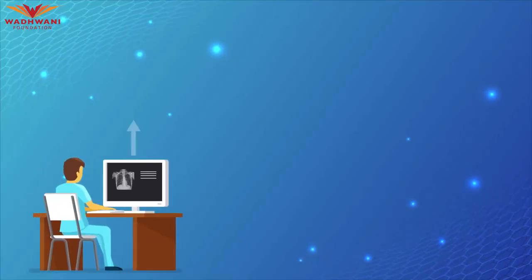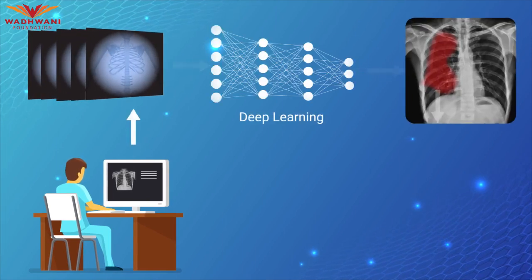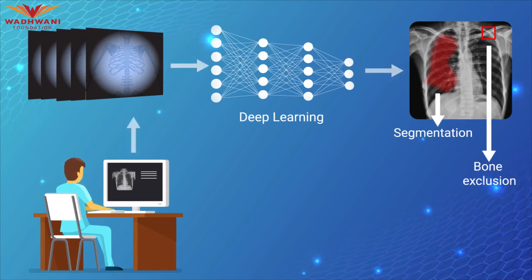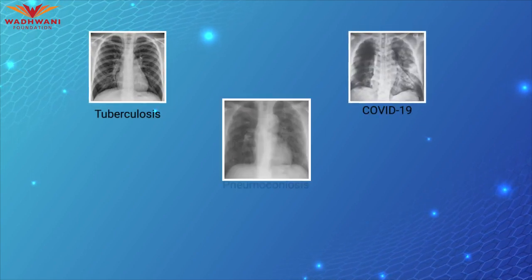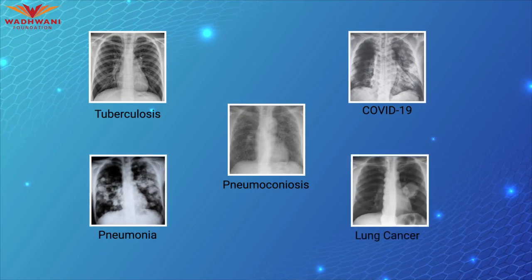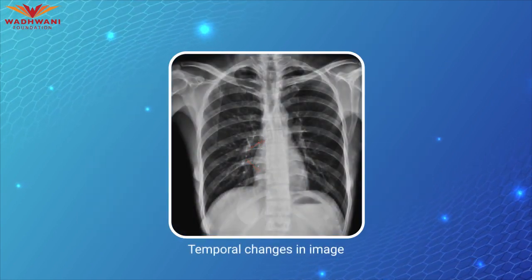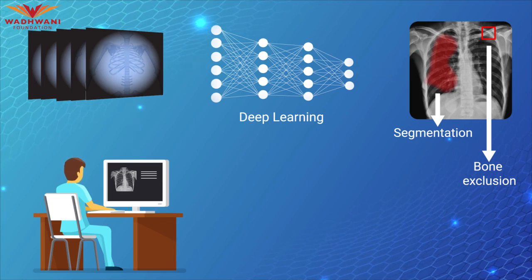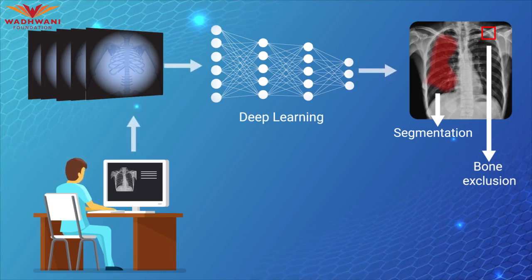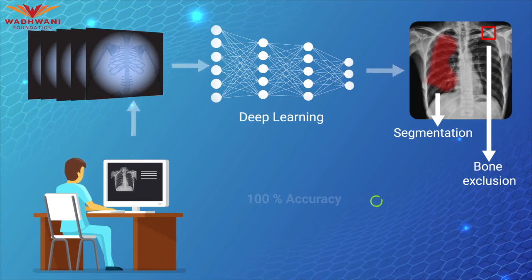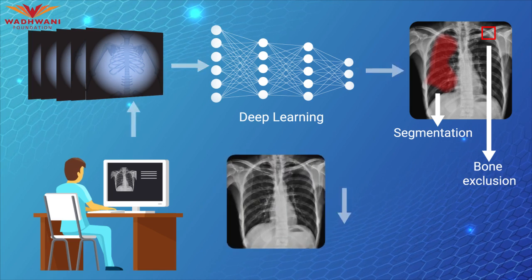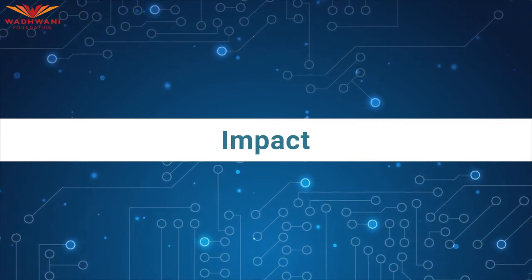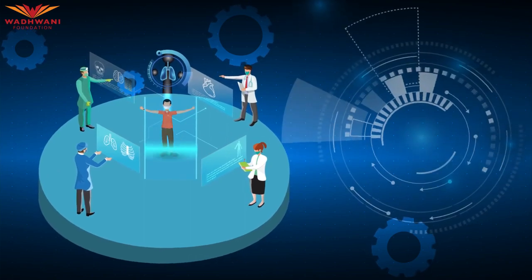The use of deep learning in chest X-ray analysis systems can automate lung segmentation and bone exclusion. It can aid in the detection of pneumonia, and in the diagnosis of tuberculosis, COVID-19, pneumoconiosis, pneumothorax, and lung cancer. It can also help in predicting temporal changes in image findings and in the diagnosis of many more ailments. Based on research evidence, coupling the use of deep learning models with radiologists will lead to higher diagnostic accuracy and minimization of human-induced errors.